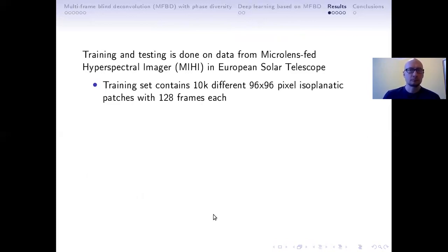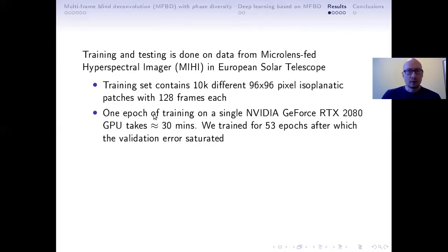So we tested our network on microlens fed hyperspectral image data. Our training set consisted of 10,000 different isoplanatic patches. Each patch consisted of 128 atmospheric frames, and these patches were 96 times 96 pixels. One epoch of training on a GPU that was available to us took roughly 30 minutes, and we trained for more than 50 epochs after which the validation error was almost saturated.